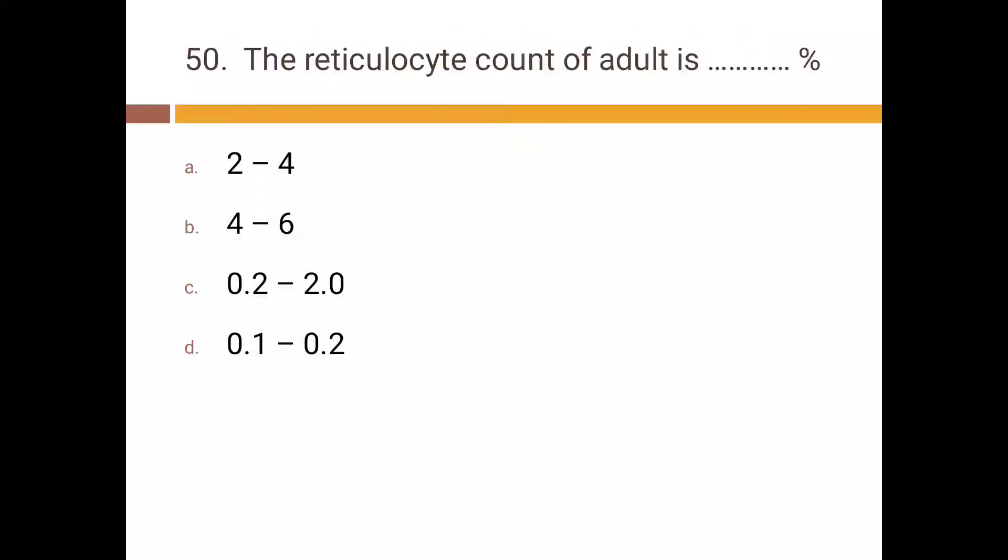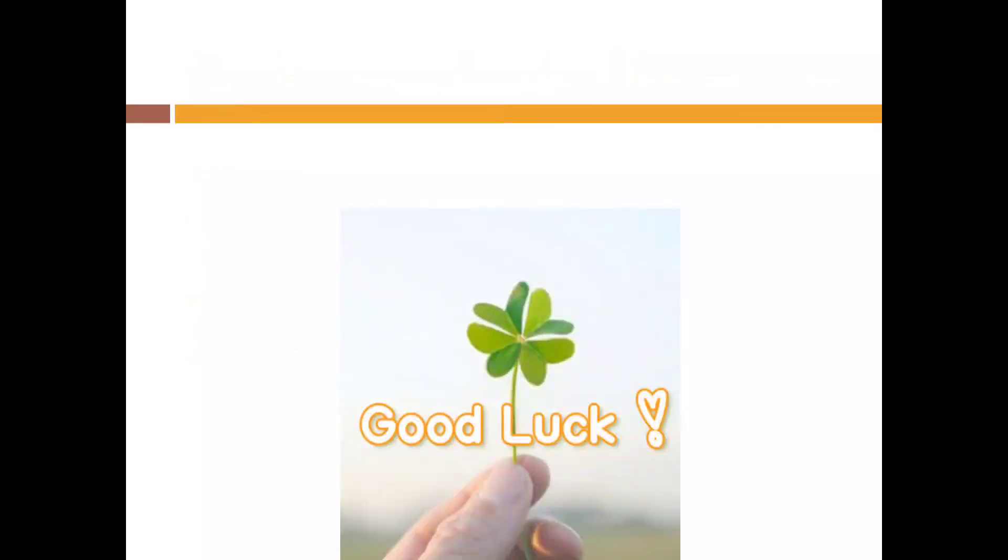The reticulocyte count of adult is: a) 2 to 4%, b) 4 to 6%, c) 0.2 to 2.0%, d) 0.1 to 0.2%. Correct answer is c) 0.2 to 2.0%. Good luck.